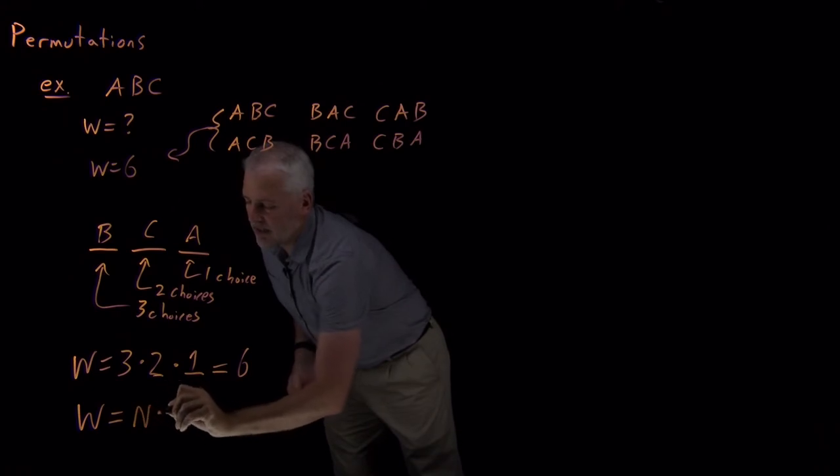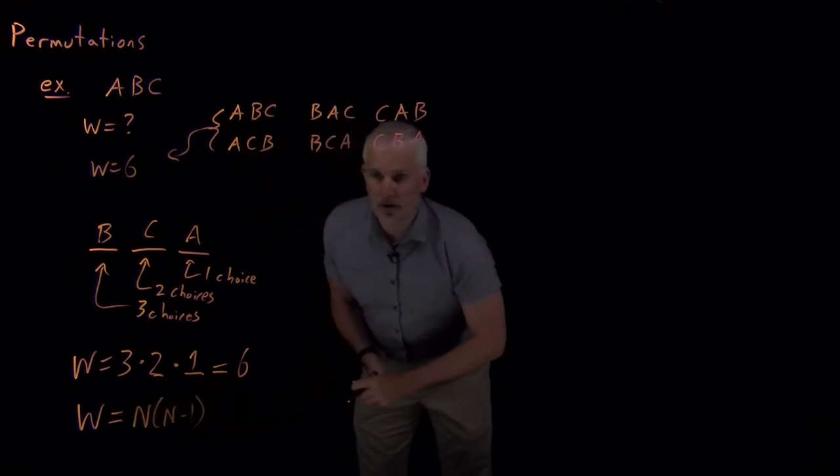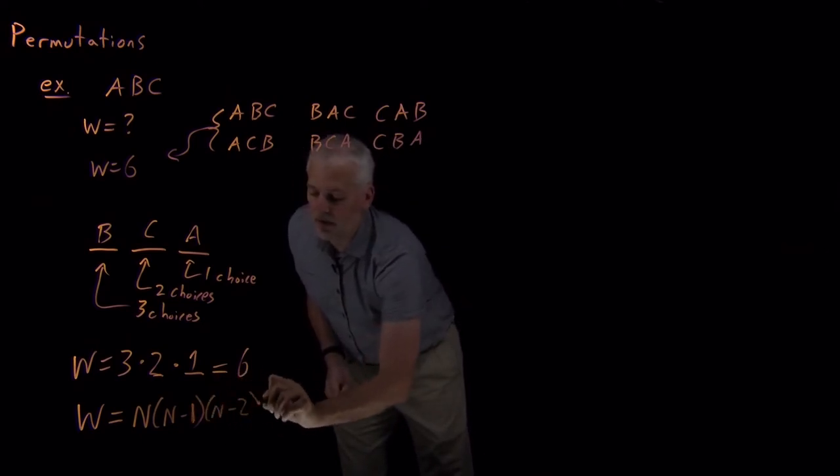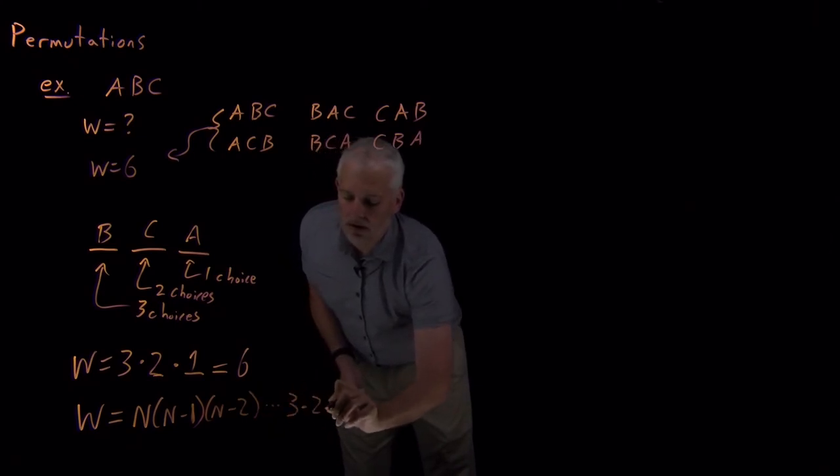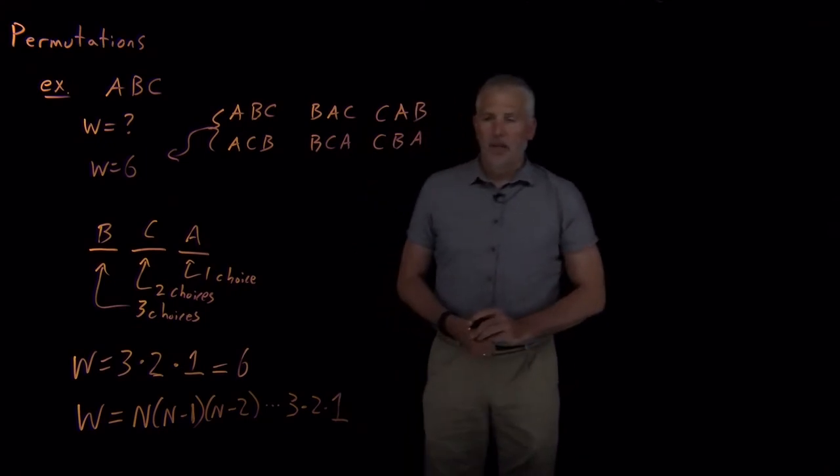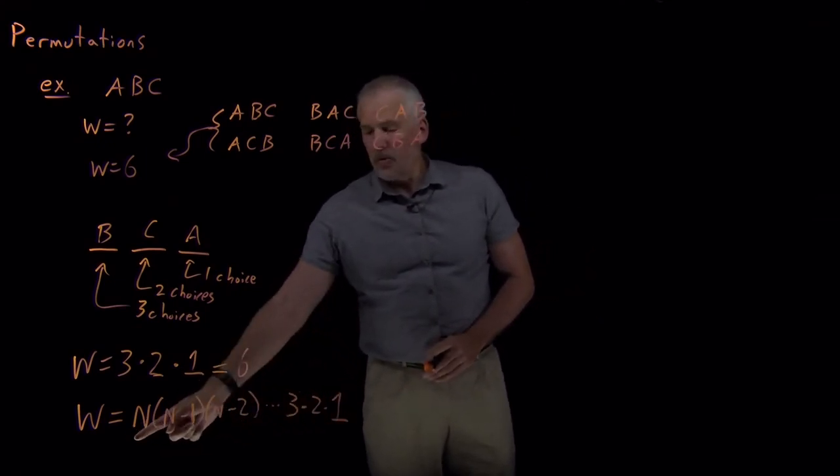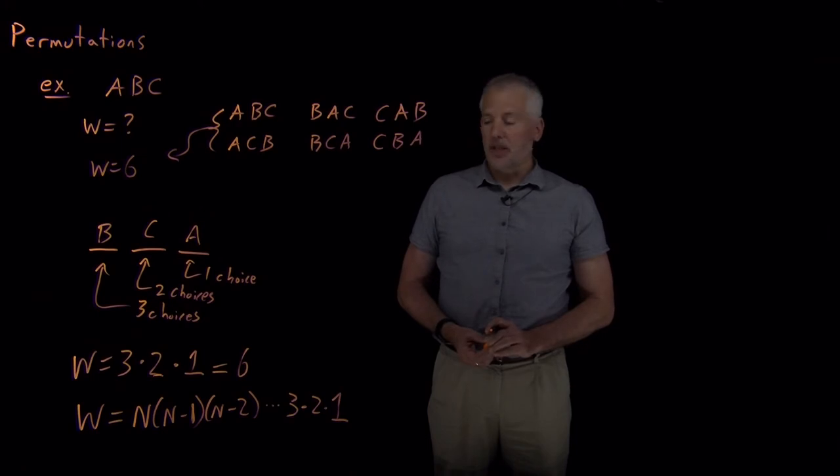In general, if I have N objects, there's a choice of any one of N of them that I could have put for the first letter, and I've only got N minus one of them left for the second letter, N minus two of them left after that, and keep going until I get down to one. So the product of all the integers from one, two, three, all the way up to the number of objects that I have, that's how we calculate the number of ways of arranging those objects, the number of permutations.